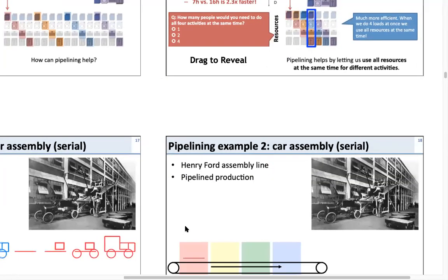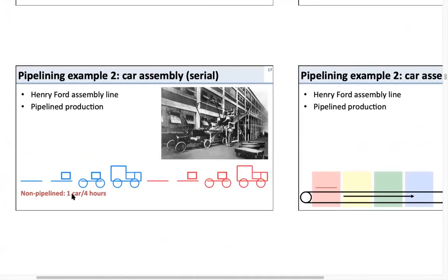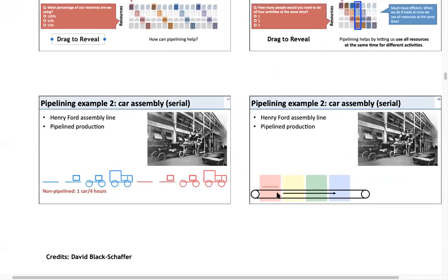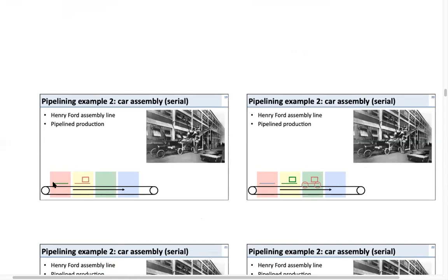This is an example of a car assembly. The first approach is non-pipelined — you build the entire car before starting the next. The pipeline approach uses an assembly line with different workstations specializing in different tasks. You keep passing the product along the line and it comes out as a finished product at the end.